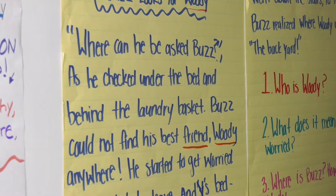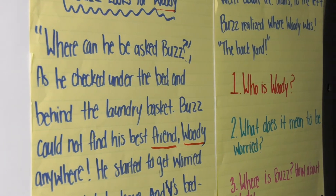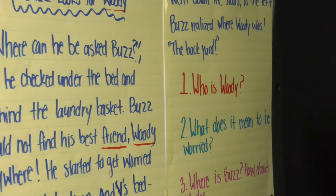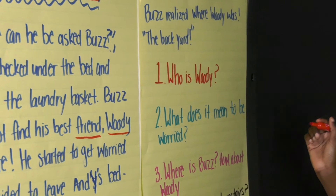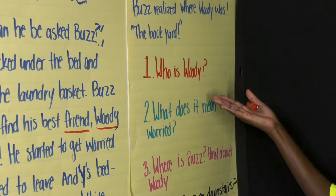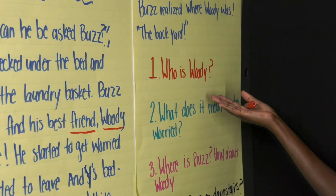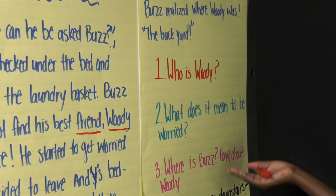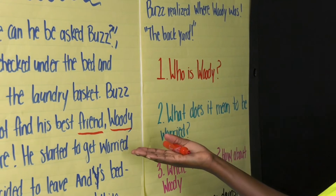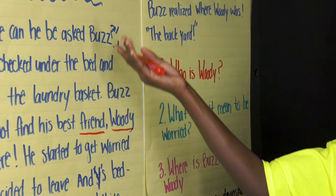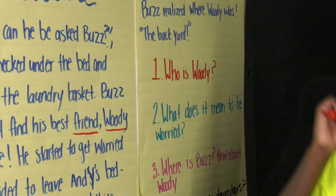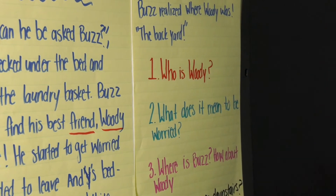Based on those clues, we already know that Woody is Buzz's friend. So now we can go ahead and answer our question: Who is Woody? Based on the clues, we know that Woody is a friend of Buzz.